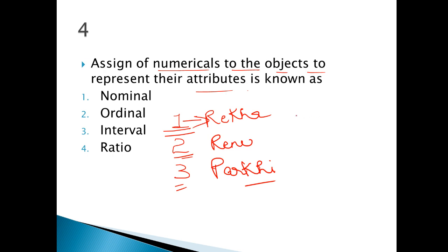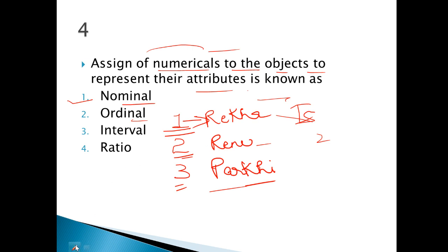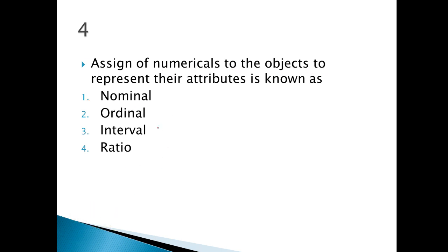So when we only assign numerical numbers, guys, we call that nominal data. In ordinal data, listen carefully — ordinal is when we are given an order. For example, my income is 1,00,000 rupees, a second person's income is 2,00,000 rupees, and a third person's is 50,000 — so you can rank them. You give the highest ranking to 2,00,000. You can do ascending and descending both — that's ordinal, where the order is known.